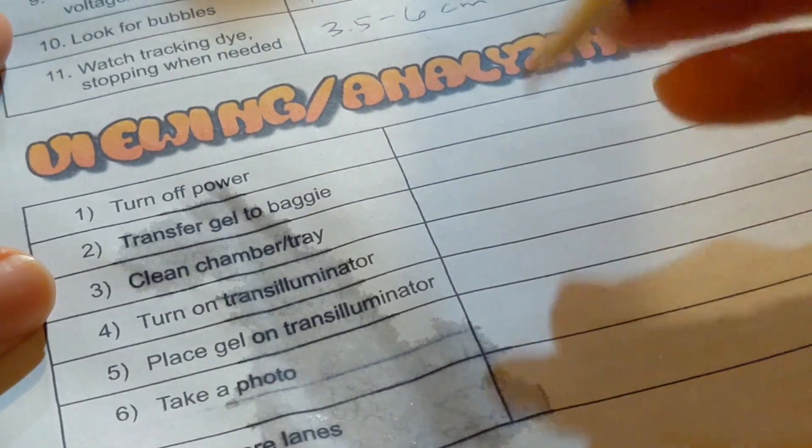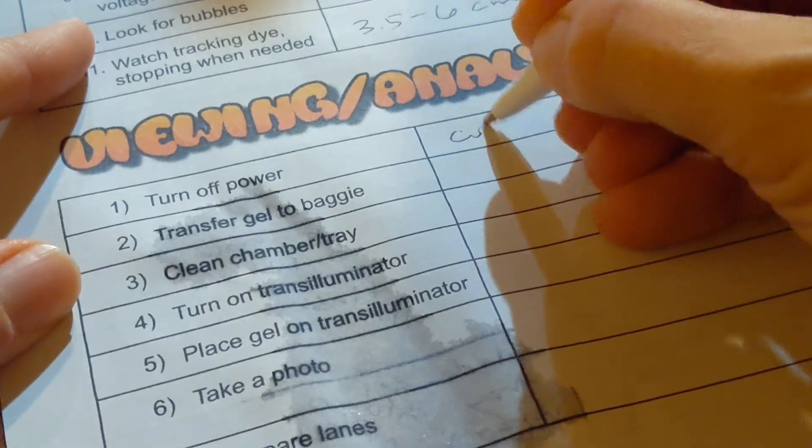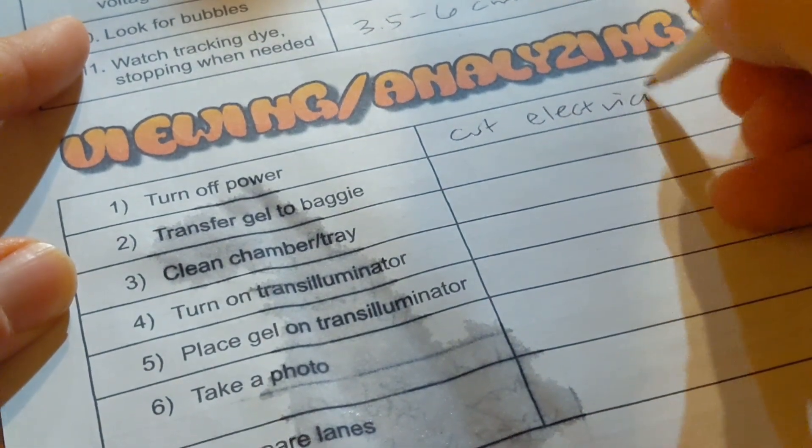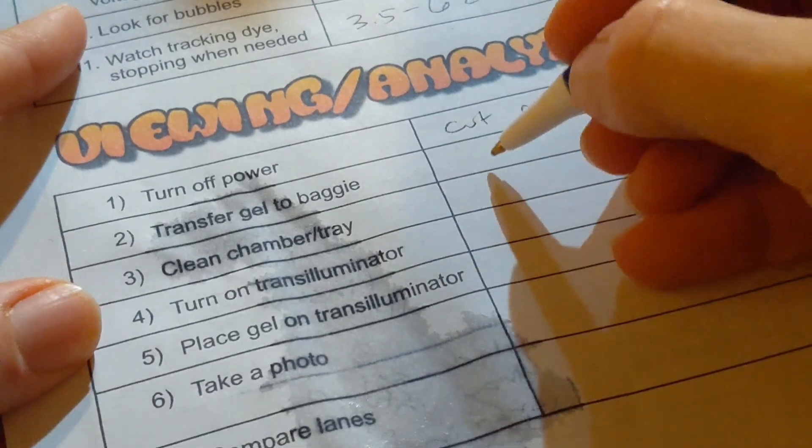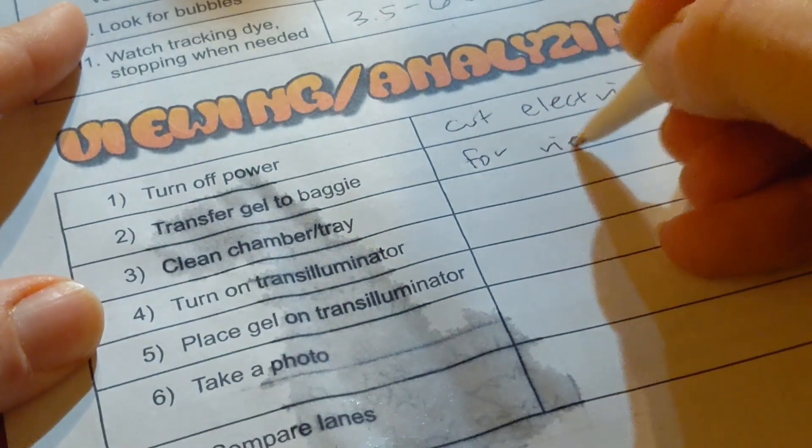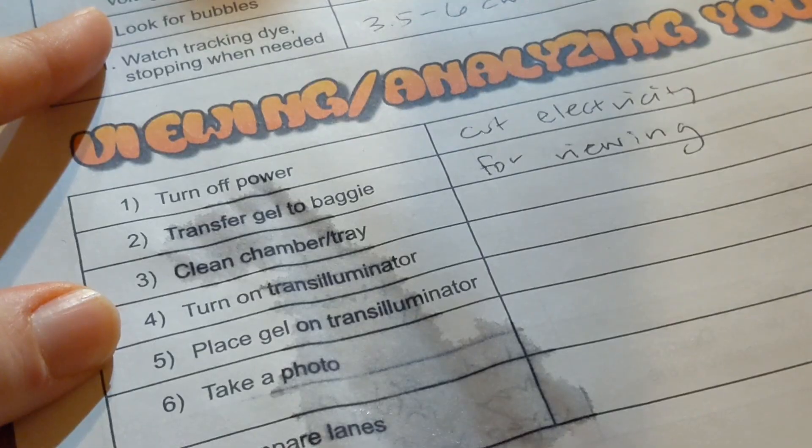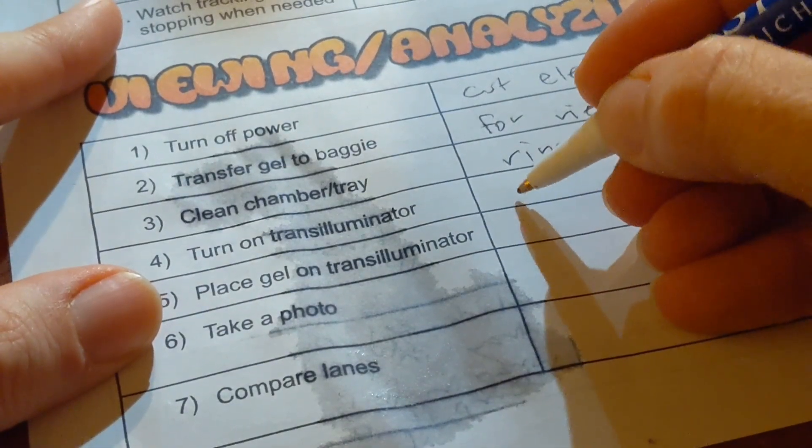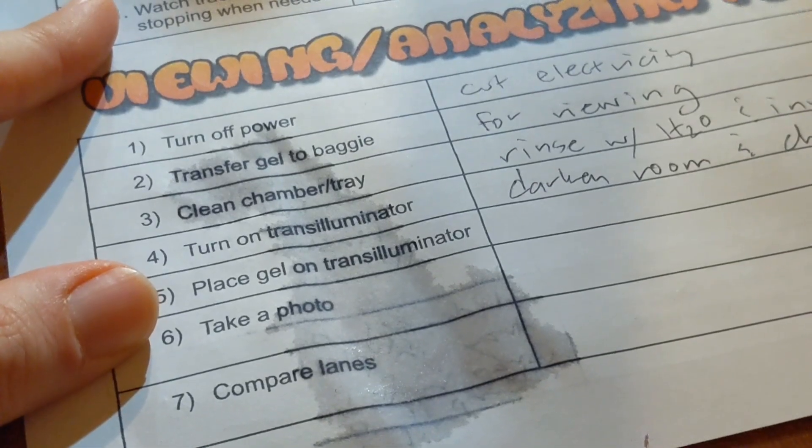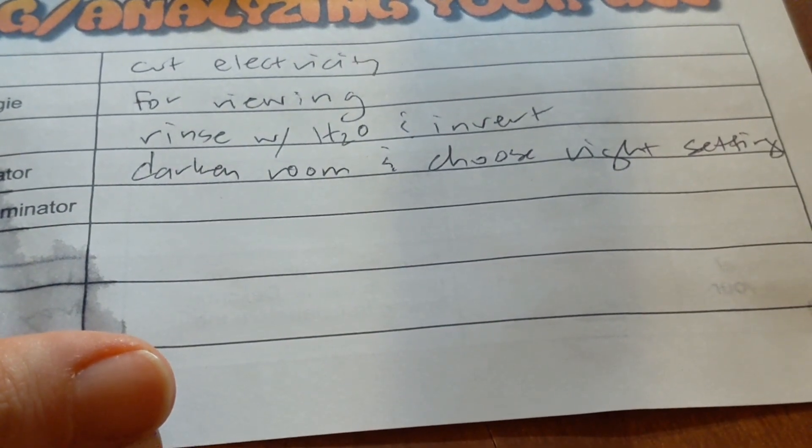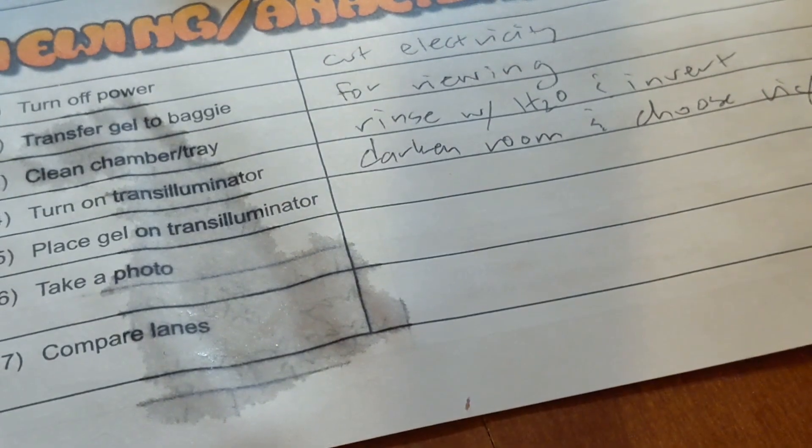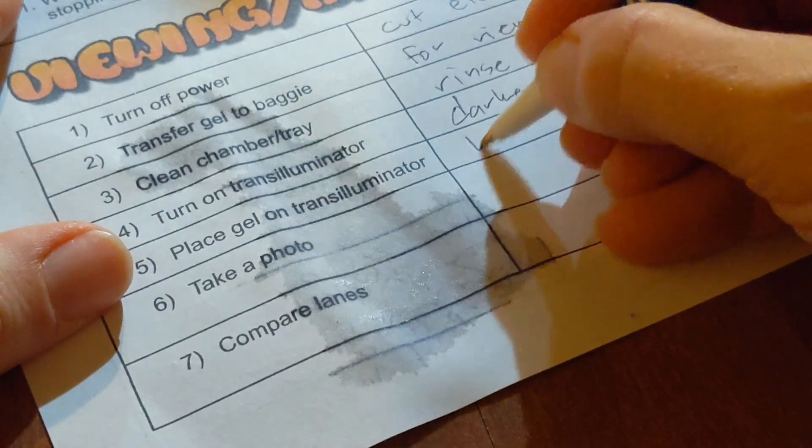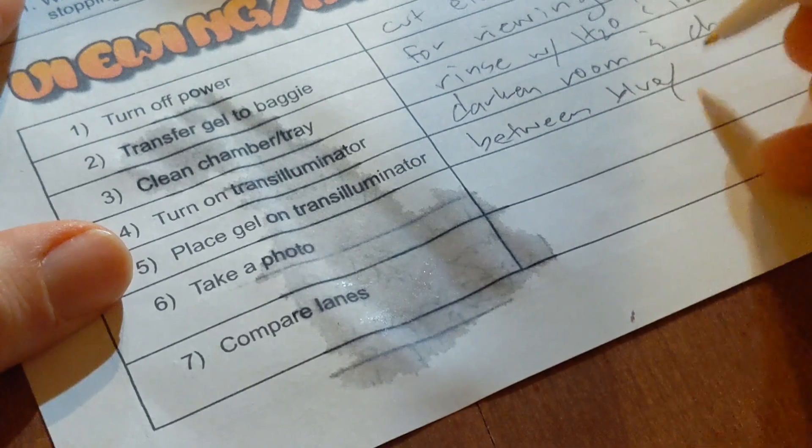Okay, let's recap here what we did. My paper got a little wet, but we turn off the power, and that's just to cut the electricity. We don't want electricity running through it when we're handling our apparatus. Transfer the gel to a baggie, and I'm going to put for viewing because we want it to be in a baggie when we set it on the blue light Trans Illuminator. Clean the chamber and tray so we rinse with water and invert to let it dry. You don't need to dry it off. Turn on Trans Illuminator. Remember to darken the room first and choose the right setting to make sure that you're able to view the CyberSafe. So if your Trans Illuminator has multiple settings like mine, make sure that you have selected the right setting. Otherwise, you might think you have no DNA. Place the gel on the Trans Illuminator. It goes between the blue and the orange plate.